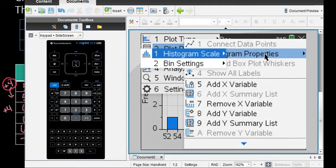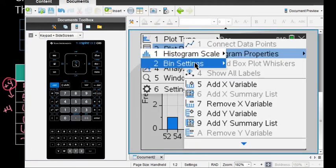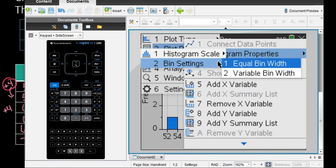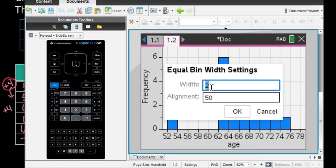I'll change my bin setting—the bin width is the same as class width. I'll use a bin width of four and align it at 52, my minimum value, so it matches the settings in my frequency distribution.